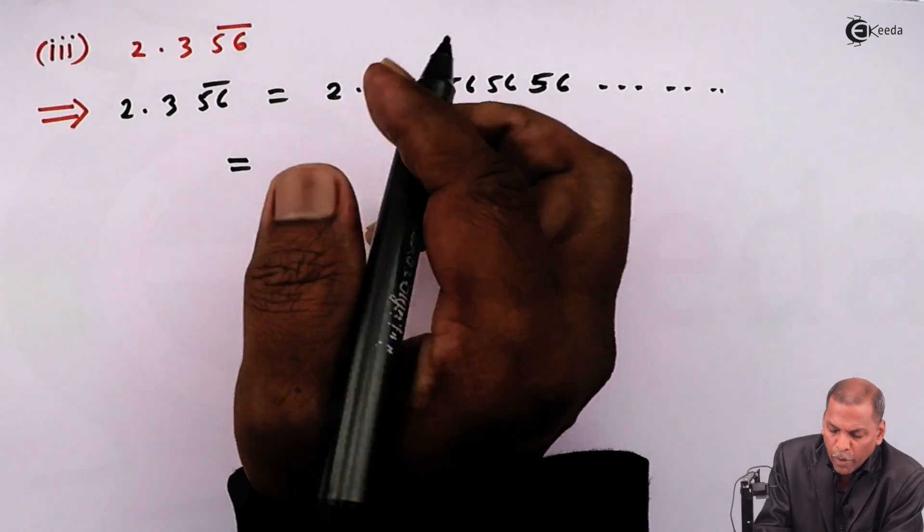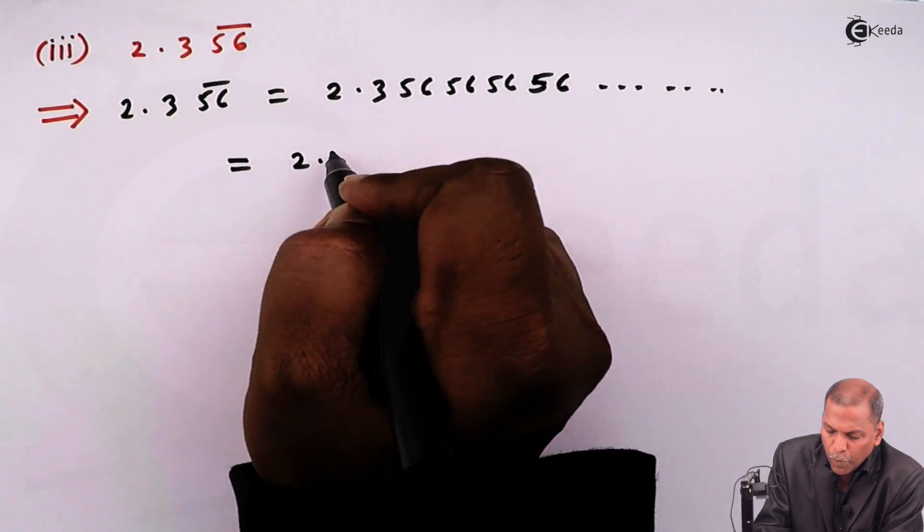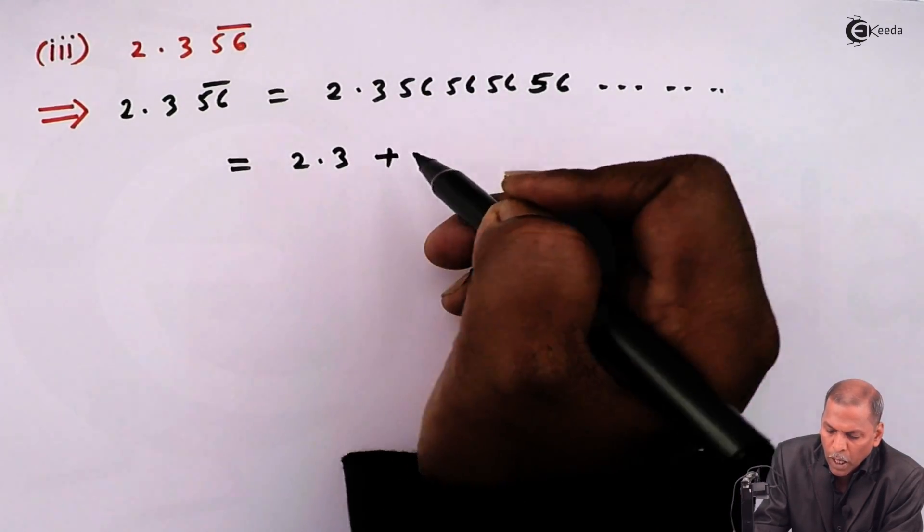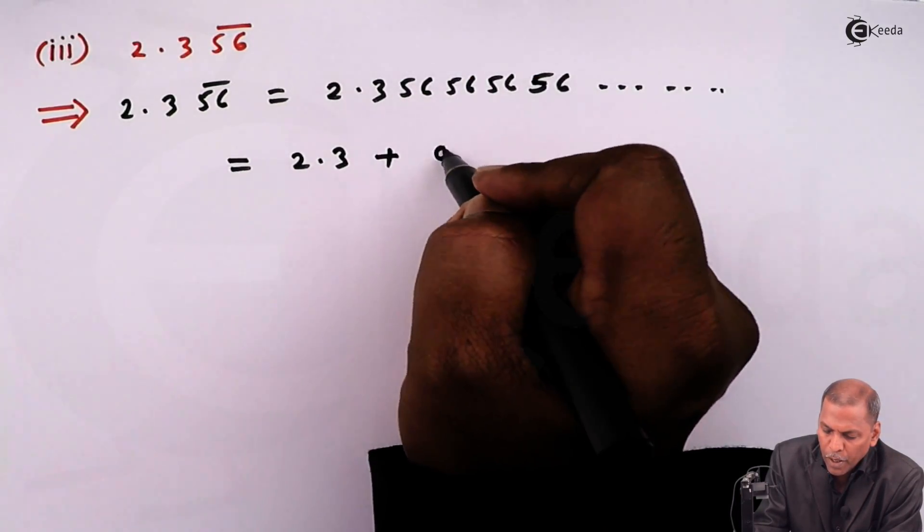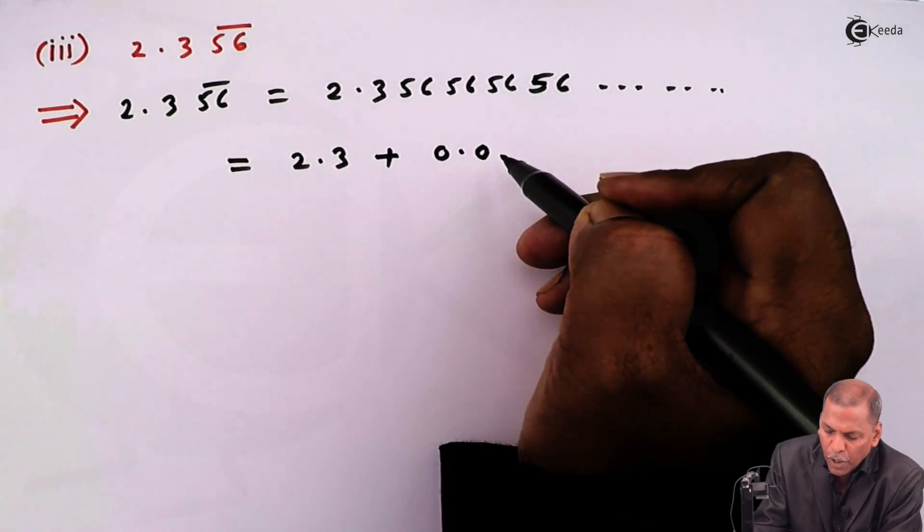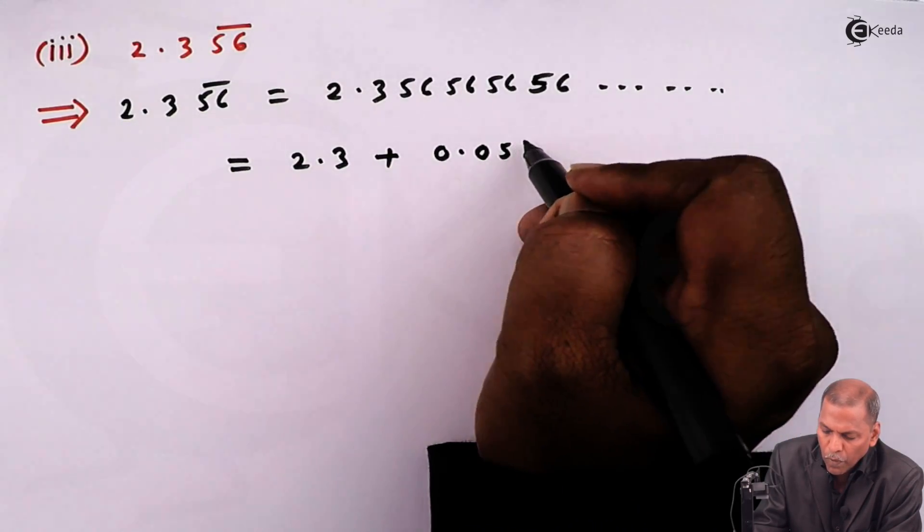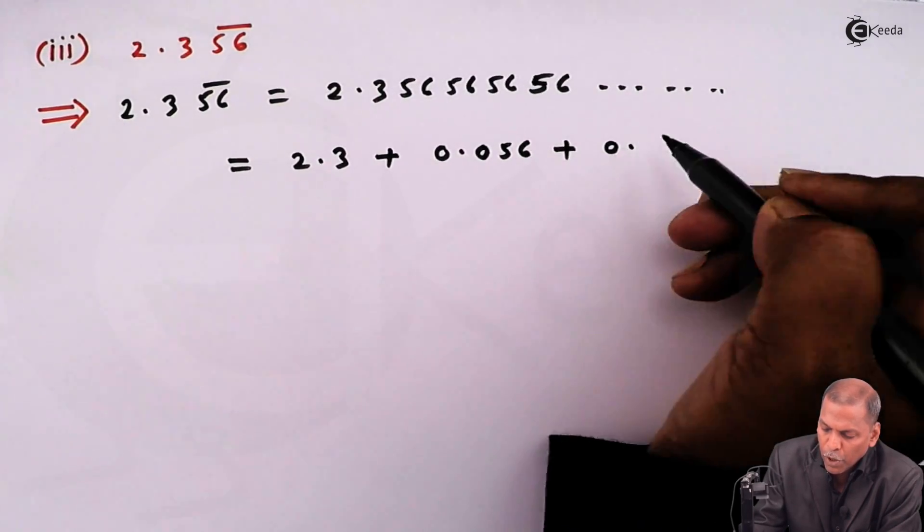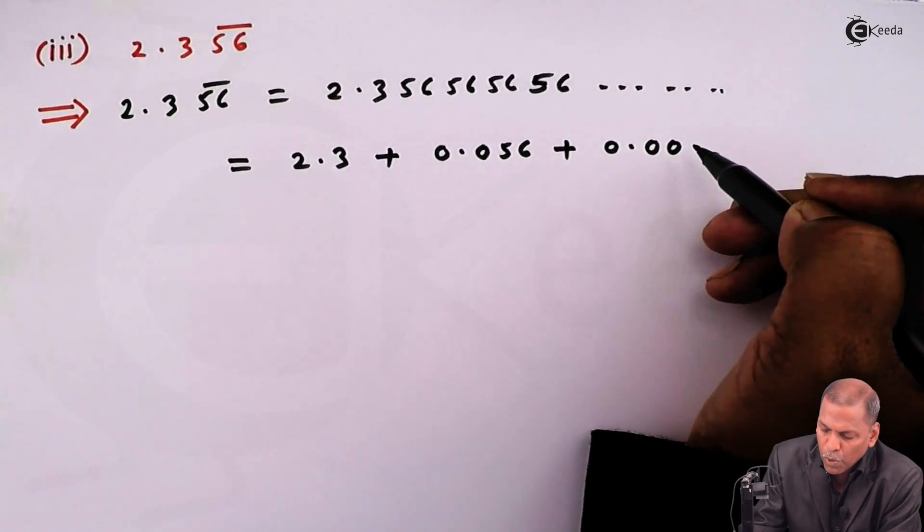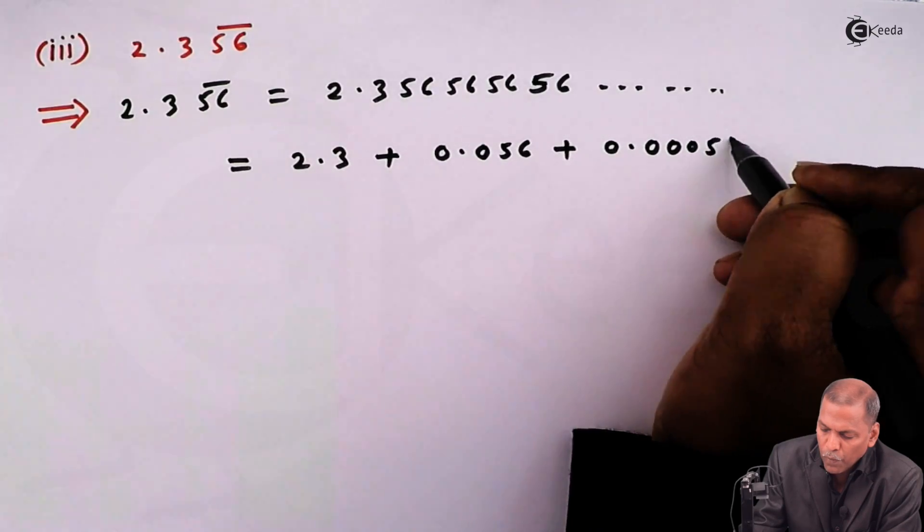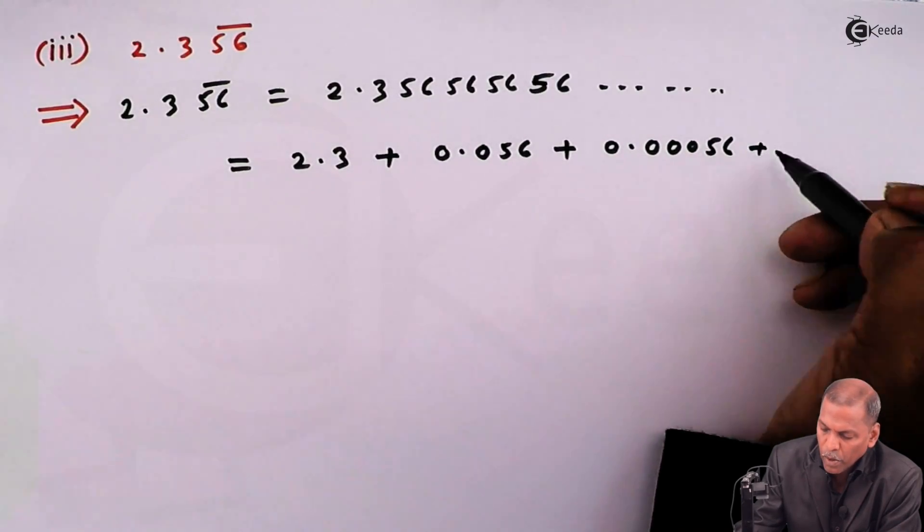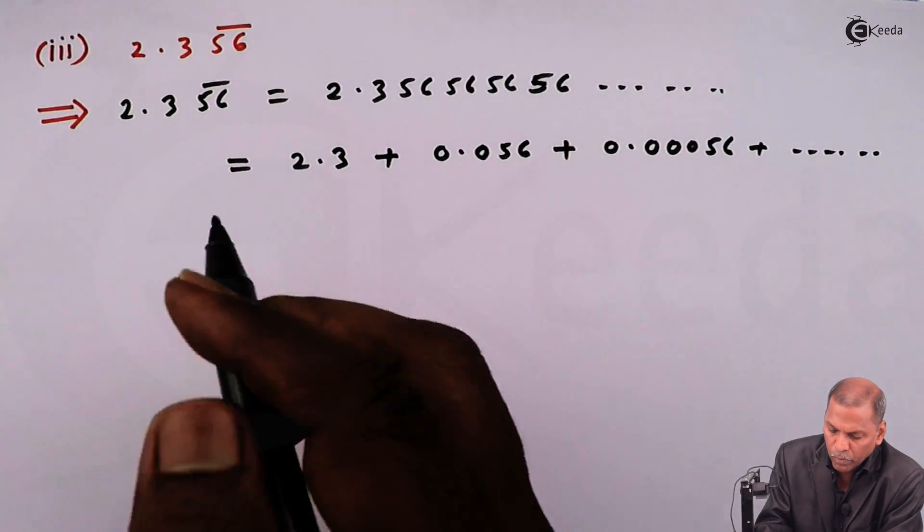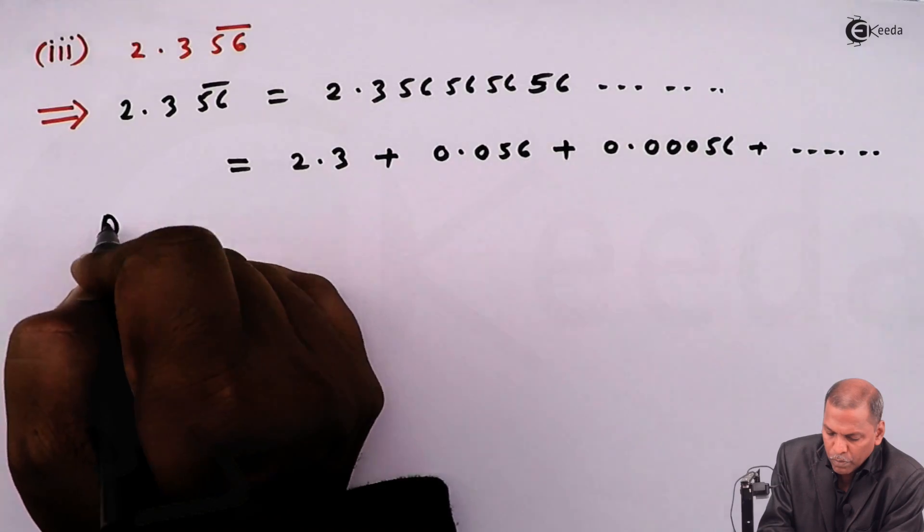The next step will be: now we write 2.3 as a first term, and then the next term will be 0.056, the next term will be 0.00056, and in this way going on.